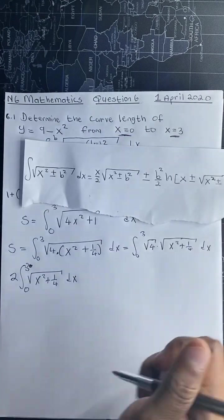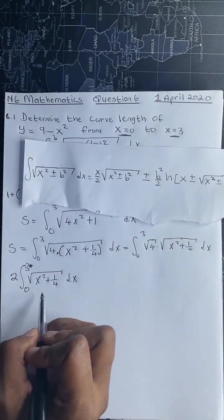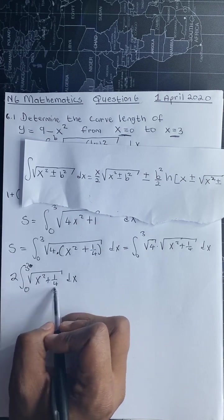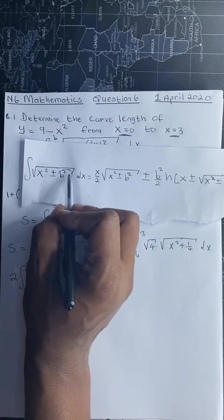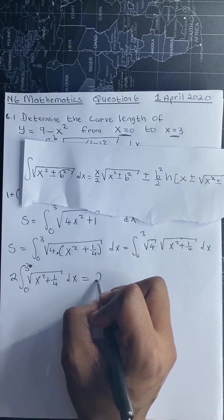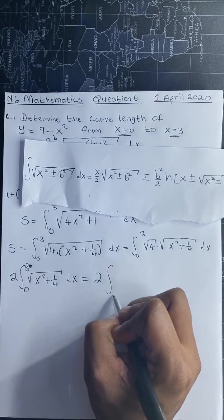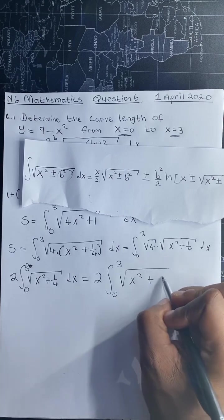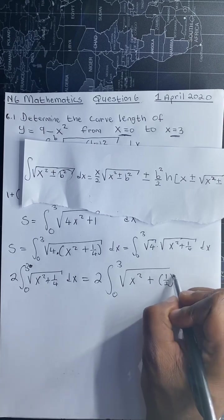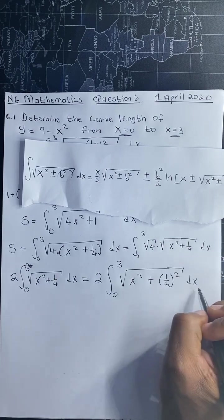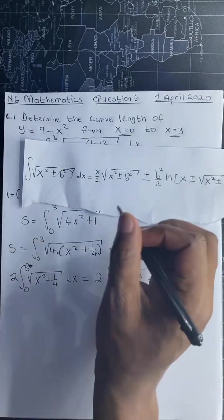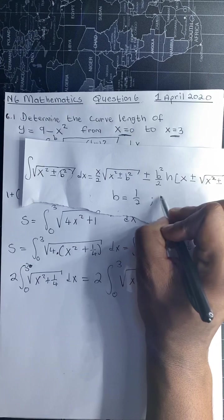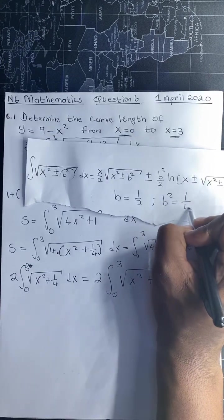From here, this almost suits the formula sheet form — no coefficient before x squared. We write 1/4 in standard form as (1/2)², so we have 2 times the integral from 0 to 3 of sqrt(x² + (1/2)²) dx. In this case, b equals 1/2 and b² equals 1/4.